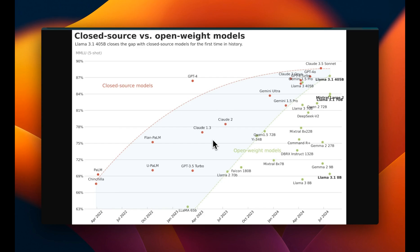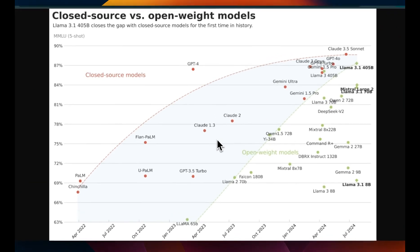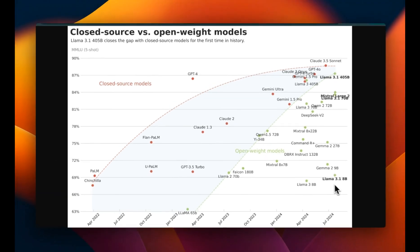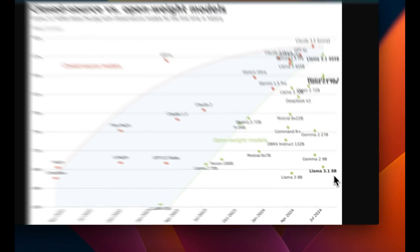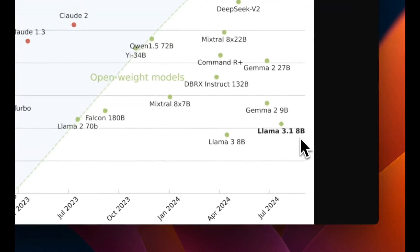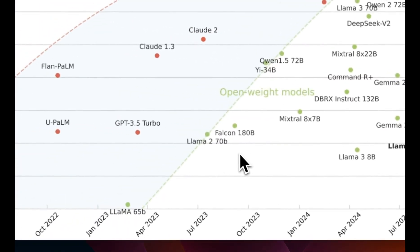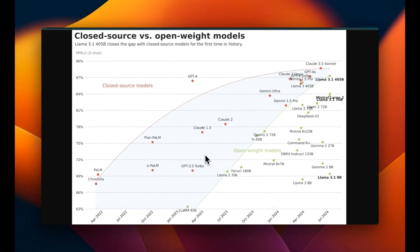This plot shows that for the first time in history, the open-weight models are closing the gap in terms of their capabilities to the closed-source models. We are able to do a lot more with fewer parameters. For example, the current Llama 3.1 8-billion model is very close to the previous generation Llama 70-billion model. This shows smaller models are better candidates for fine-tuning today.